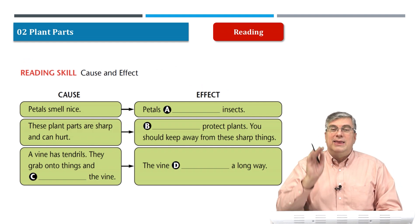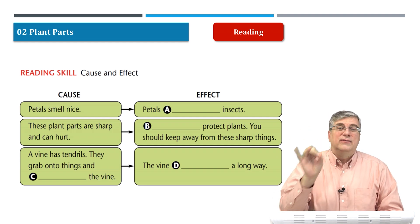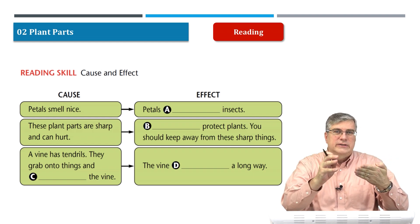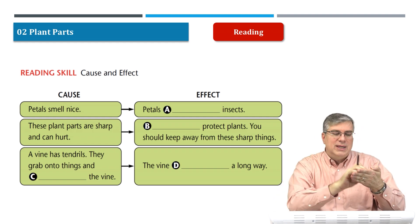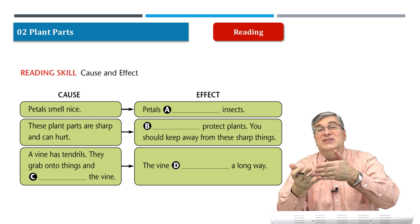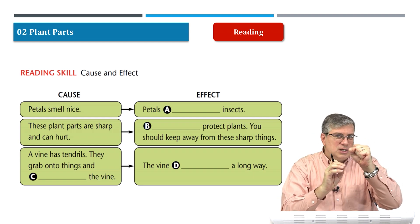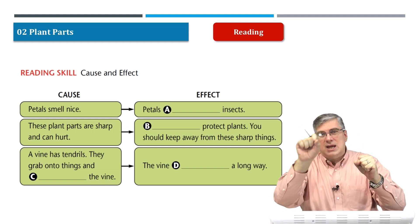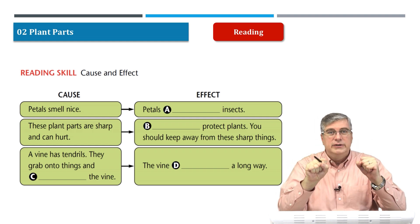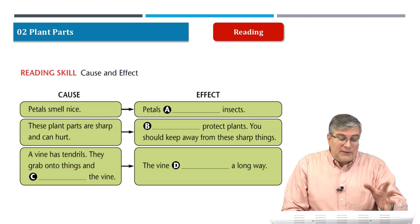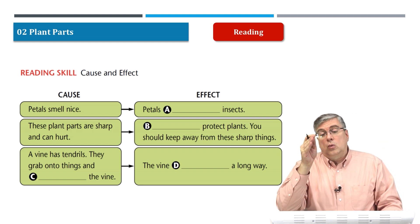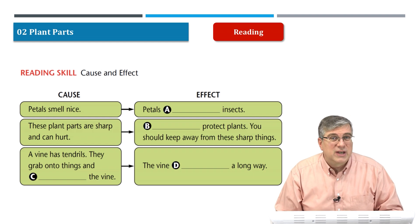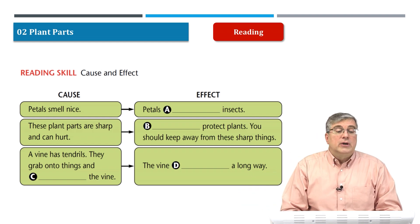Now let's talk about the reading skill: cause and effect. Cause and effect means something happens and it creates another thing. Because this happens, another thing happens — this is the cause, and the effect is the result. One action makes another action. On the left side we see the causes; on the right side we see the effects. The cause is something that happens — someone or something does it to cause another action.